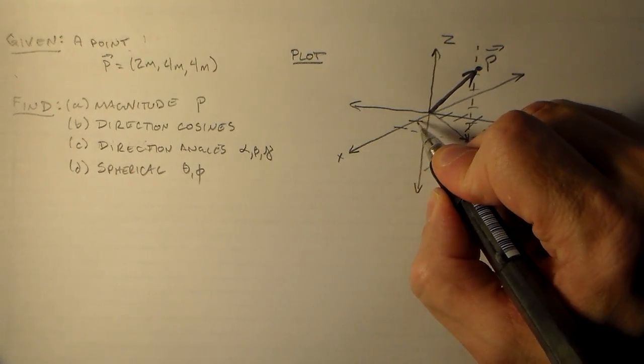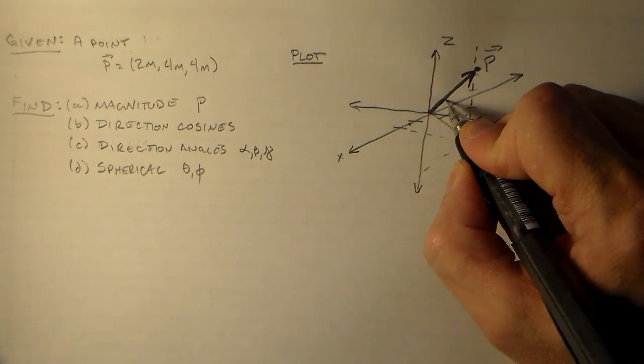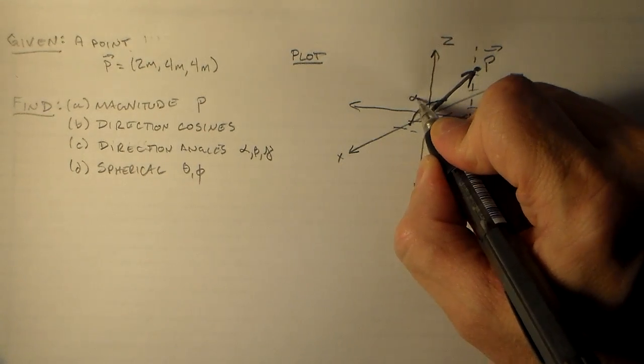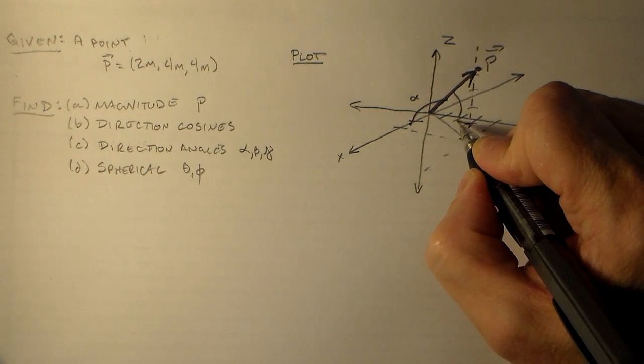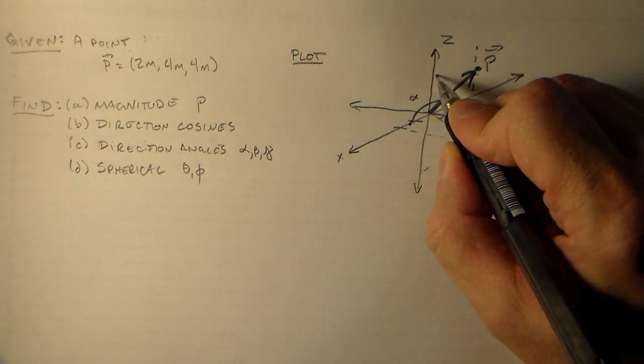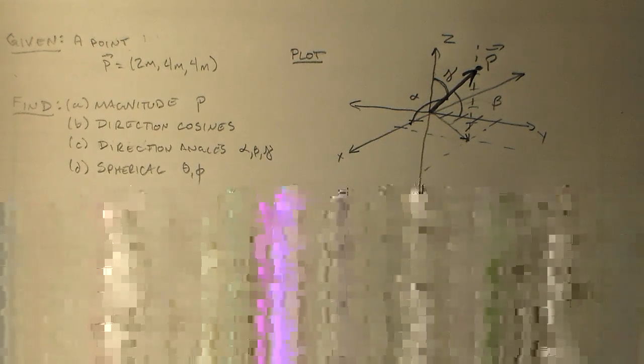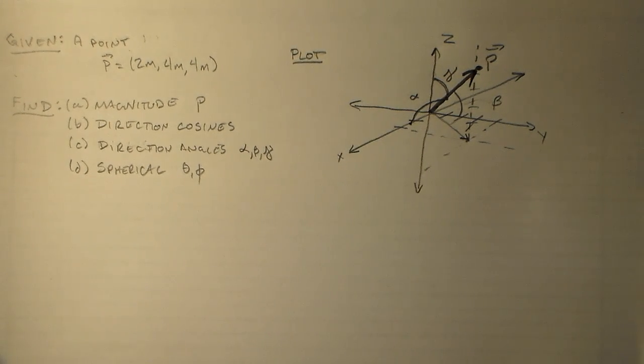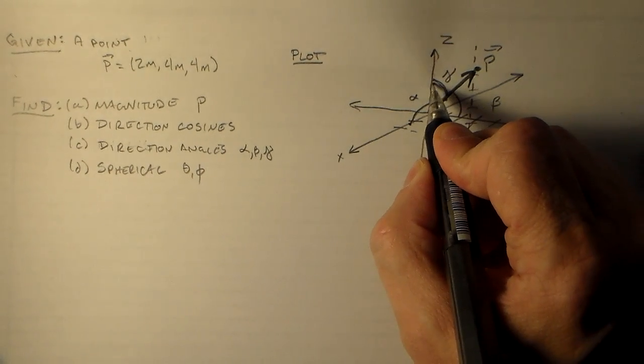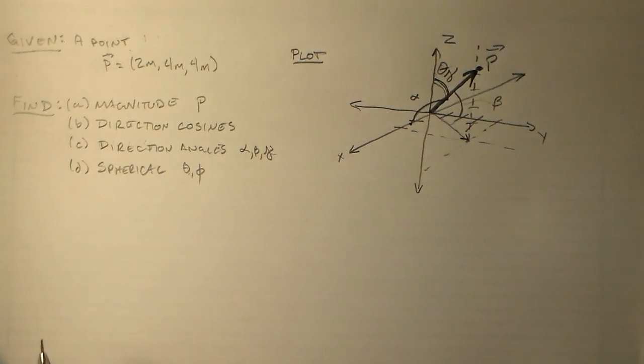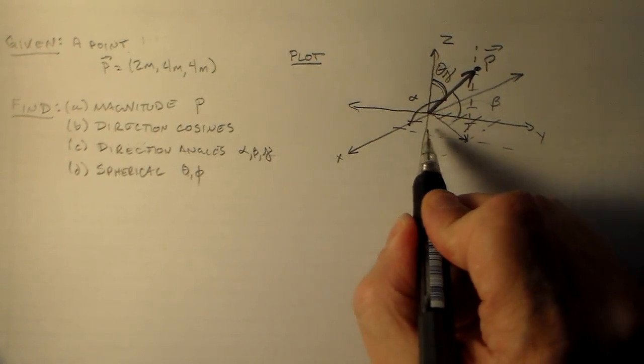So these angles that we have are from the axis to the vector here. From the x axis to this vector p, that's alpha. From the y axis to the vector p, that's beta. And then from the z axis to the vector p, that's gamma. So that's looking pretty good so far. It turns out that this angle from z to p, that's also theta. So this spherical angle theta and this angle gamma, they're the same angle.